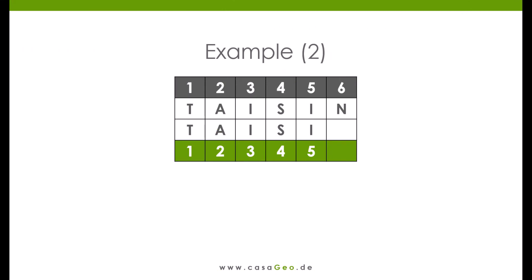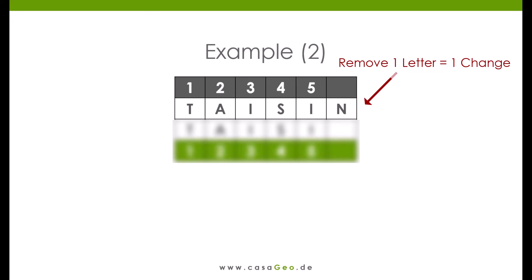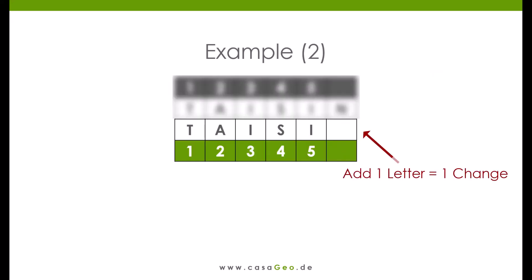In the second example, we consider the case where the two words have different lengths. Let's say my name is missing the last letter. Again we only have to change one character. For the first string we get six minus one, so five again, but for the second then five minus one, so four.